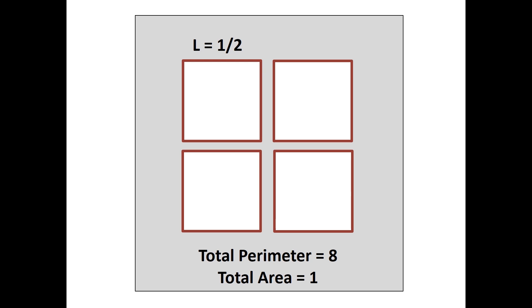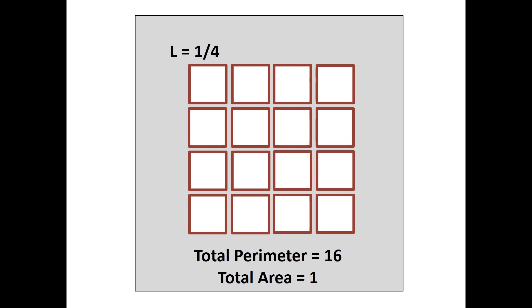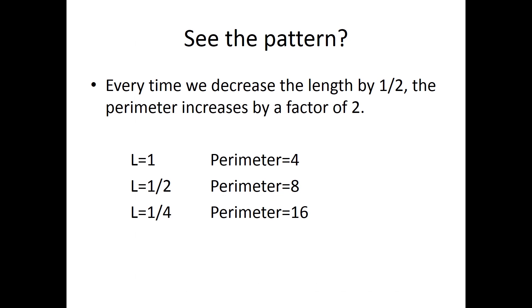We can repeat and break each of those windows into 4 smaller windows. See the pattern? Every time we cut the side length in half, we double the perimeter. This means that the perimeter times length is a constant.